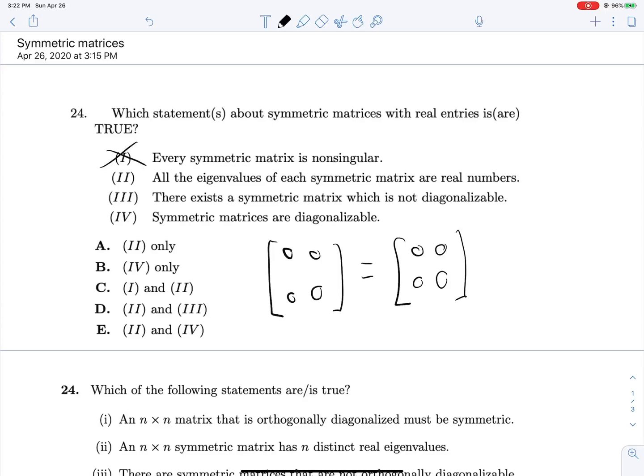What about 2? All the eigenvalues of each symmetric matrix are real numbers. Well, point A of the spectral theorem says A has n real eigenvalues, so this is true.